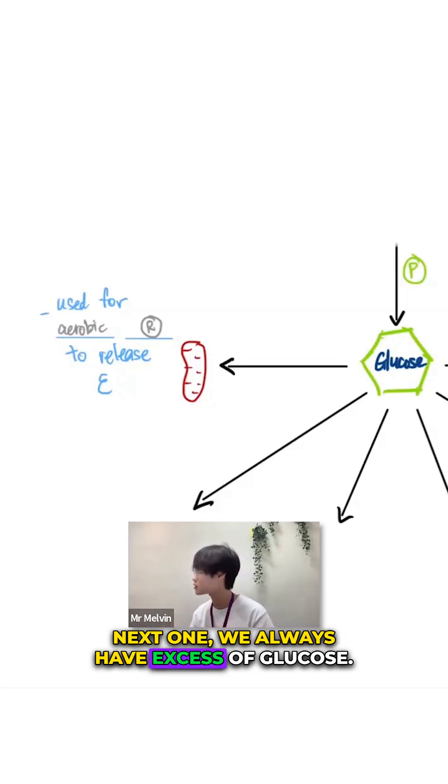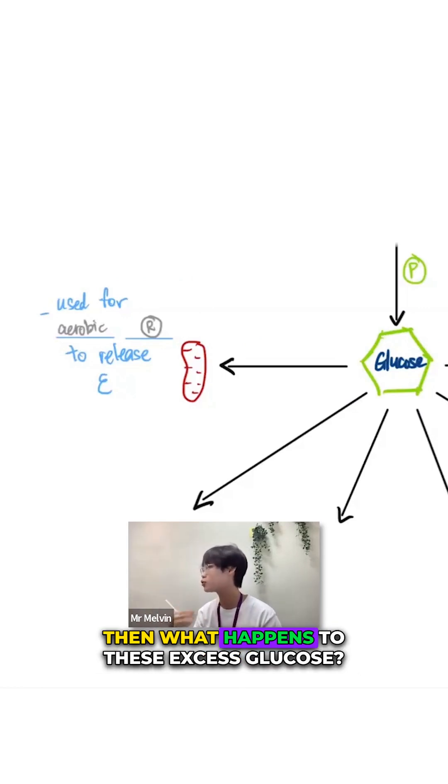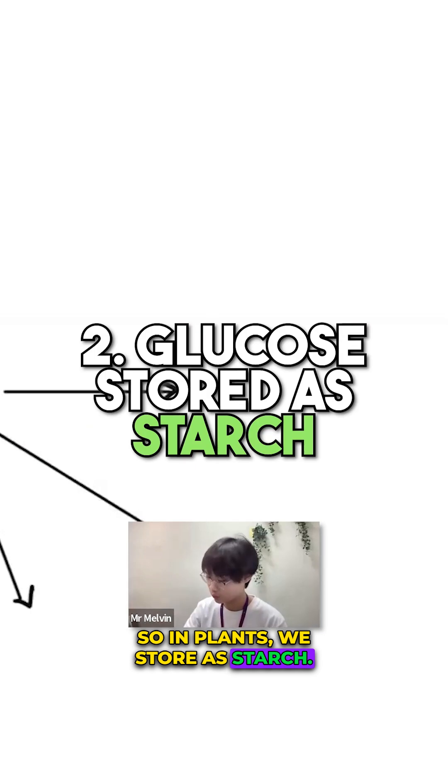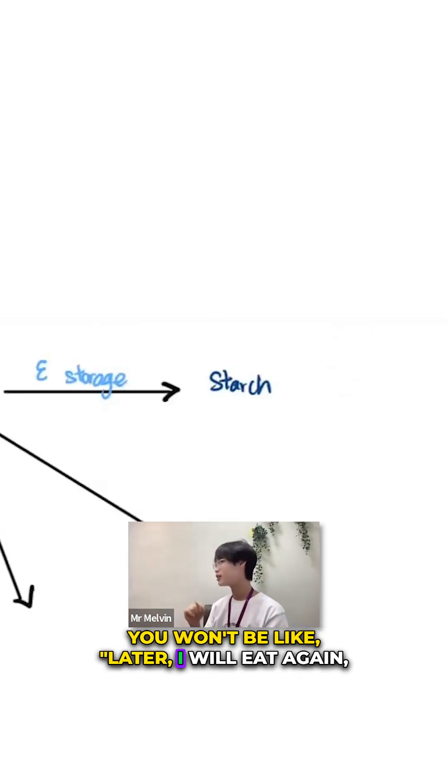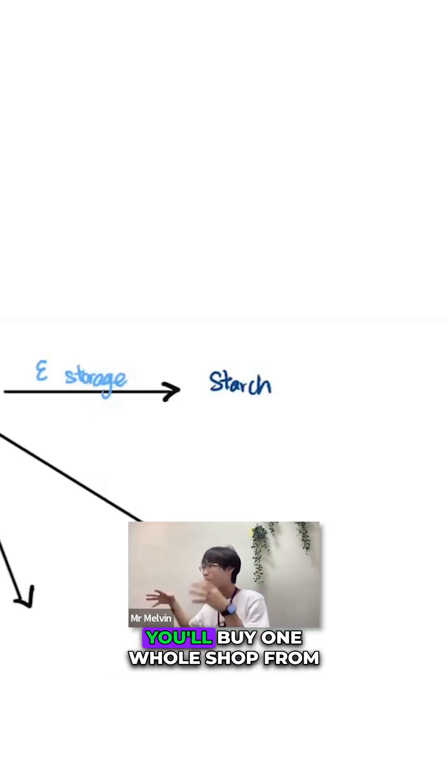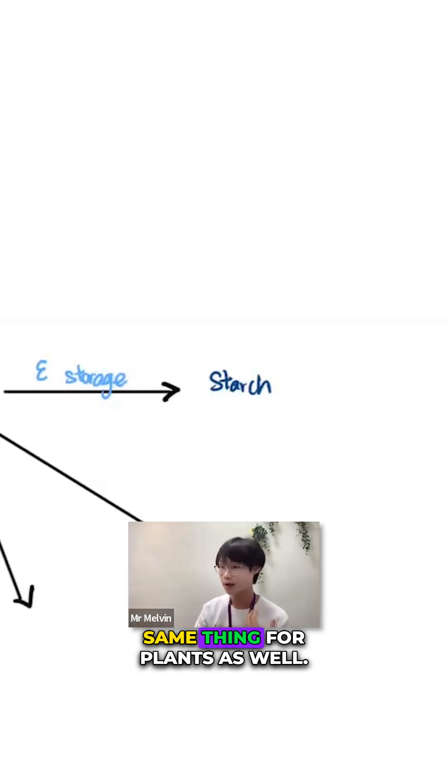Next, we always have excess glucose. What happens to this excess glucose? In plants, we store as starch. One simple analogy: You go to the supermarket to buy stuff. You won't be like, later I want to eat again so I go down and buy again. No, you will buy one whole shop from the supermarket. Same thing for plants as well.